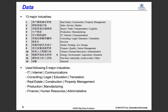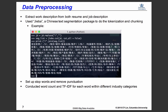Looking at the full dataset, there are 13 major industries, and some of them are highly correlated with each other. So we selected five major industries to work with: IT, consulting, real estate, production/manufacturing, and finance. The main data processing challenge is extracting work descriptions from both resumes and job descriptions.